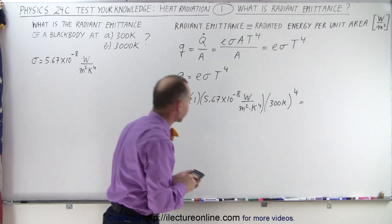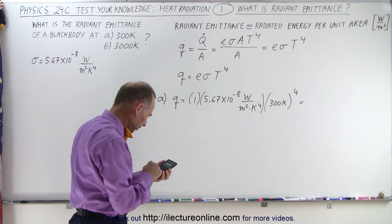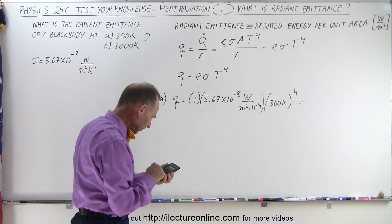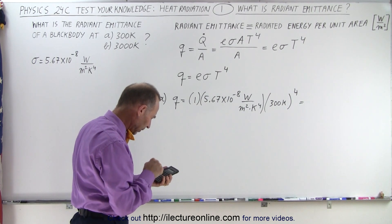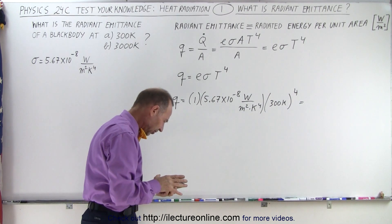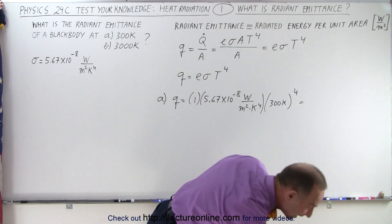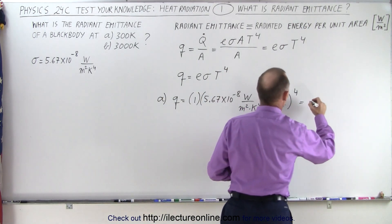We need a calculator. All right, 5.67 E to the minus 8 times 300 to the fourth equals, that looks like about 459 watts per square meter.